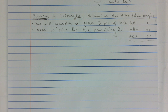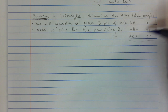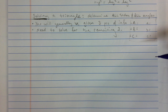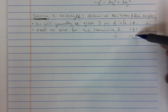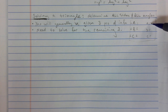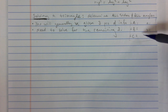When a question asks for that, it really doesn't matter what you solve for first, as long as you end up answering the question: what are all three angles and all three sides? We're dealing with right triangles, so one of these angles is going to be a 90-degree angle. They'll have to give you at least one more side to get you started.